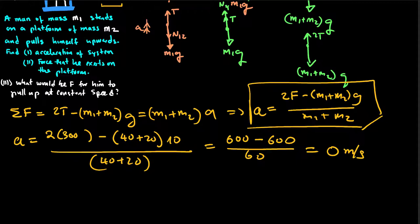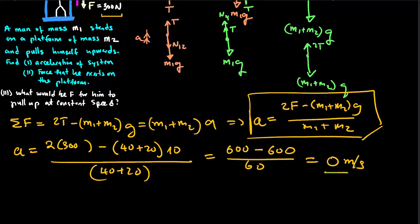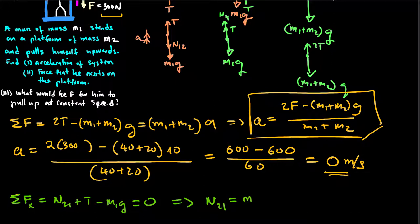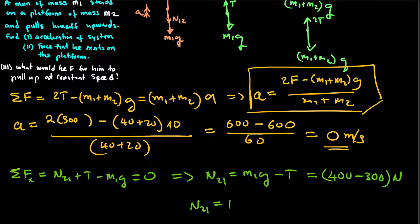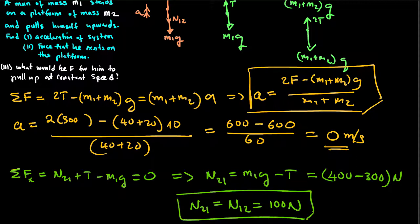The next question is to calculate the force that he asserts on the platform. Since the acceleration is 0, the sum of forces on the man equals N21 plus T minus M1G = 0. Therefore N21 equals M1G minus T, which equals 40×10 minus 300 = 400 minus 300 = 100 newtons. The force he asserts on the platform is 100 newtons.